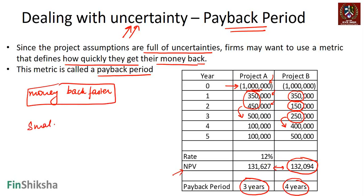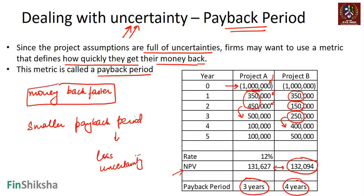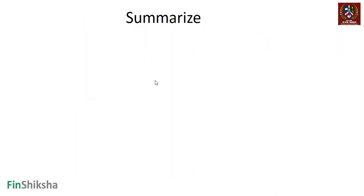Given that the NPVs are not materially different, you would prefer the project that gives your money back faster. The smaller the payback period, the less uncertainty you have to deal with. In real life, a faster payback means the money is free to be reinvested sooner, more projects can be taken up, and in environments with capital availability constraints, when your cash gets released is a very important consideration.